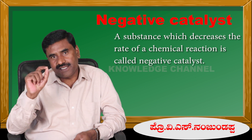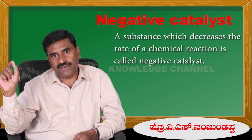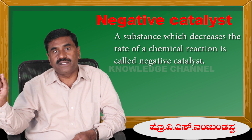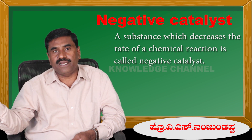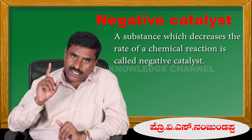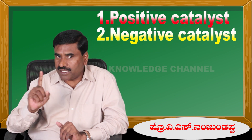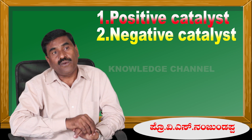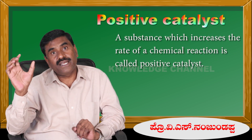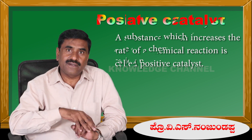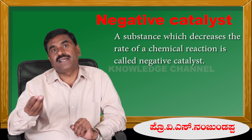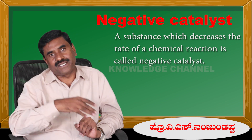A catalyst is a substance which alters the rate of a chemical reaction without undergoing any chemical change at the end of the reaction. Catalysts are of two types: positive catalyst and negative catalyst. A substance which increases the rate of a chemical reaction is called a positive catalyst, and a substance which decreases the rate of a chemical reaction is called a negative catalyst.